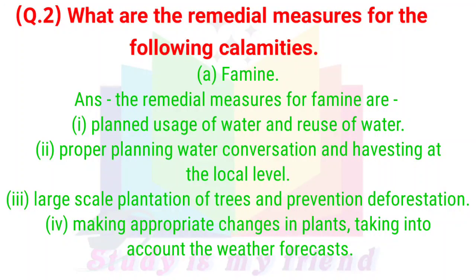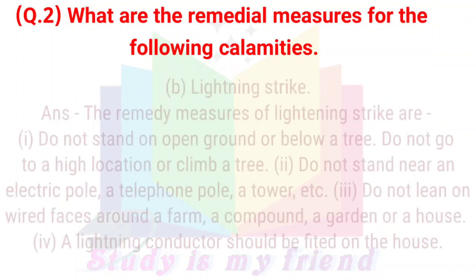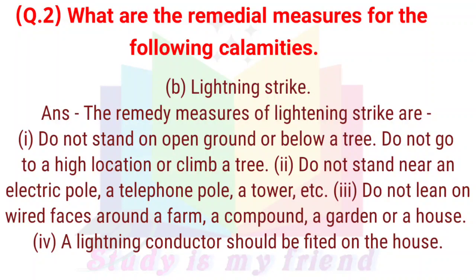4. Making appropriate changes in crop plants taking into account the weather conditions. B) Lightning Strike. Answer: The remedial measures for lightning strikes are: 1. Do not stand on open ground or below a tree. 2. Do not go to a high location or climb a tree. 3. Do not stand near an electric pole, a telephone pole, a tower, etc.